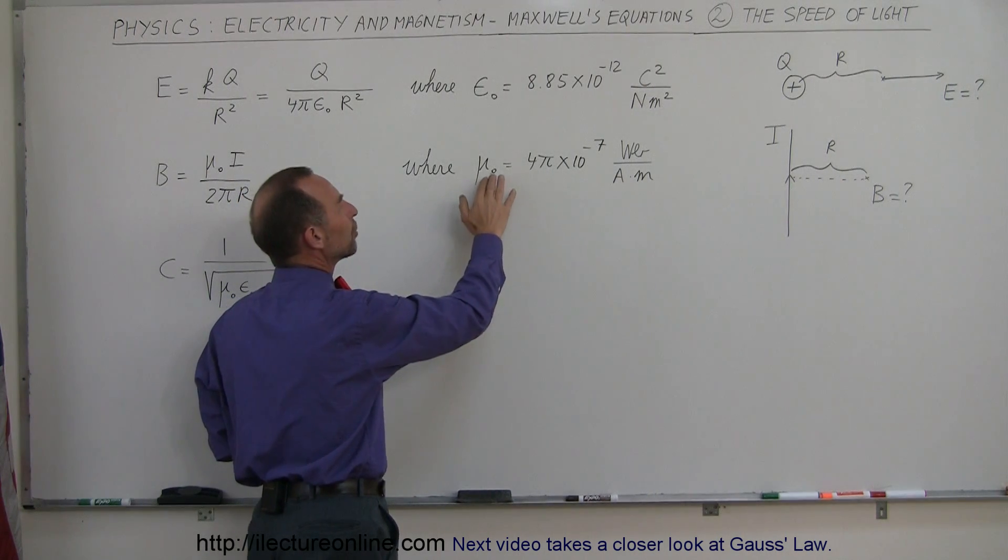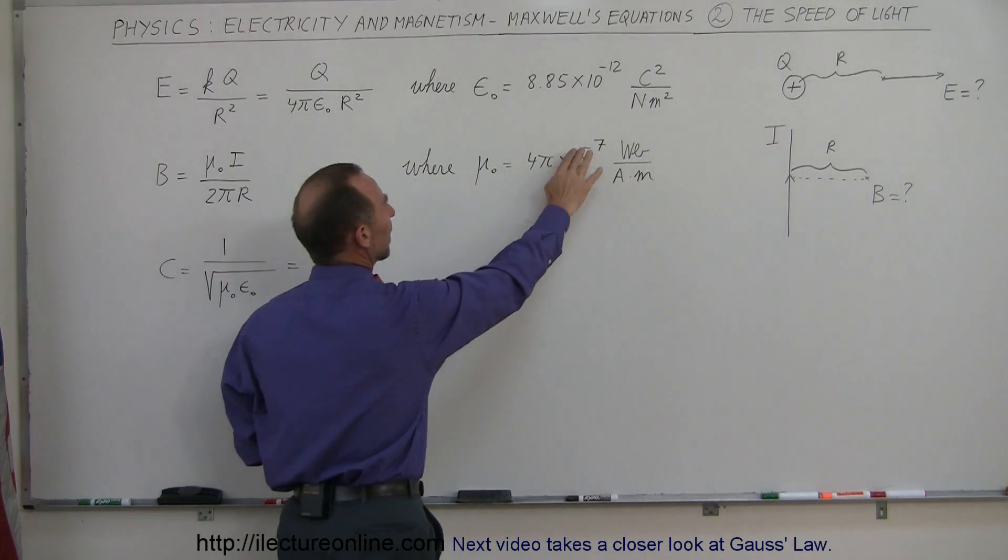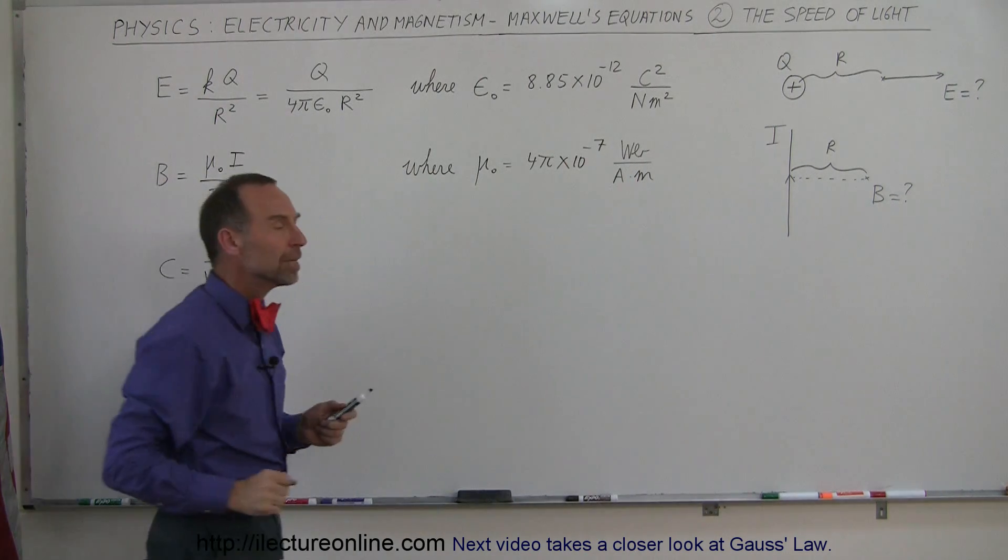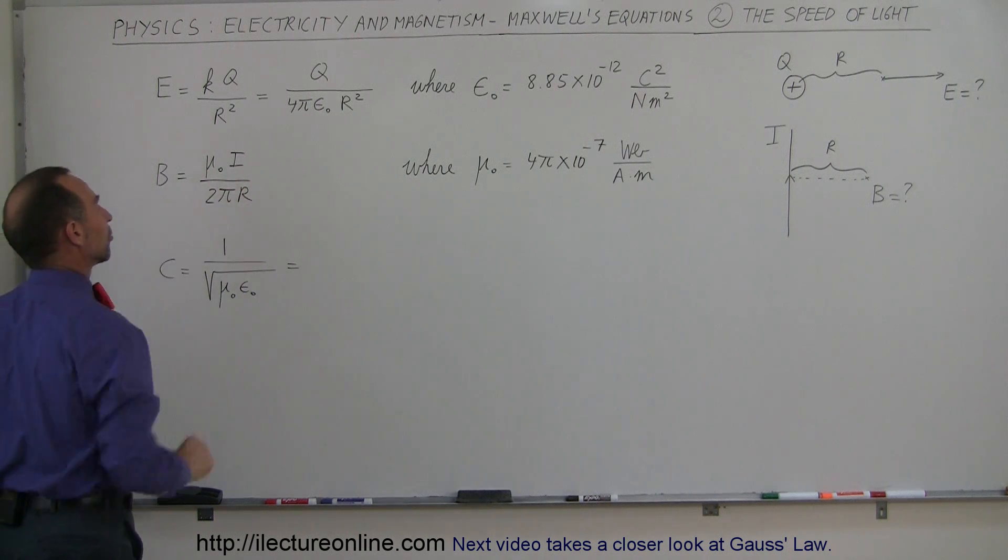What is this? This is what we call the permeability of free space for magnetic fields, 4π times 10 to the minus 7 webers per amps per meters, times the strength of the current divided by 2π times the distance from the wire, and that gives you the strength of the B field.